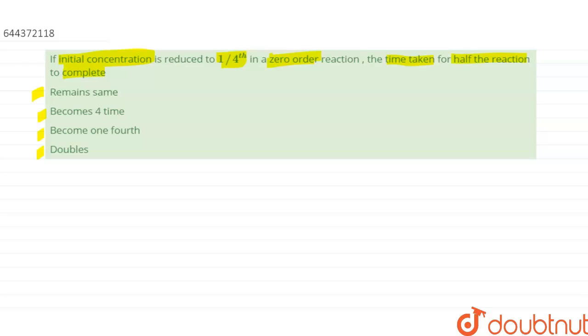So according to the question, initial concentration is reduced to 1 by 4 and it is a zero order reaction, and we have to find out the time taken for half of the reaction, that is, we have to find T half.